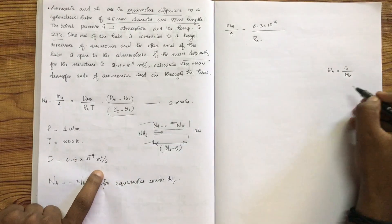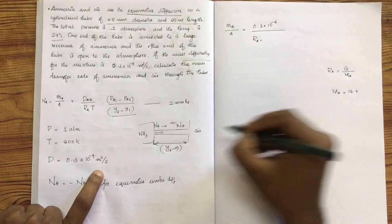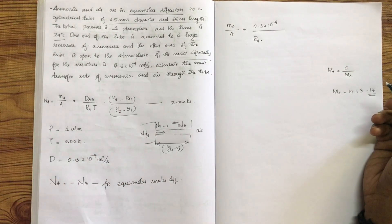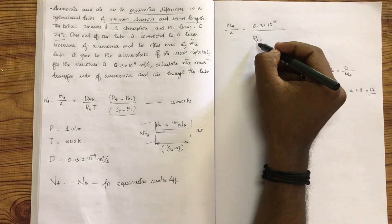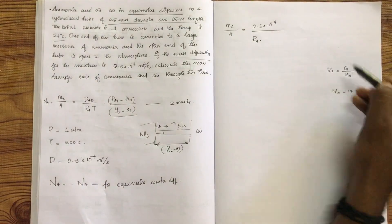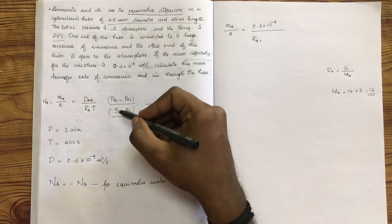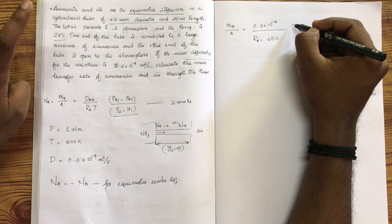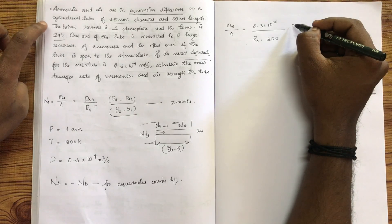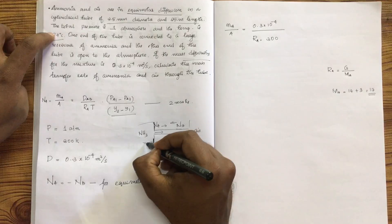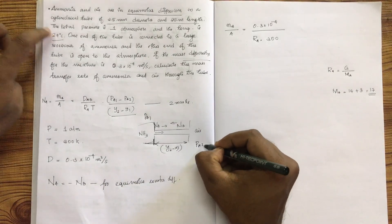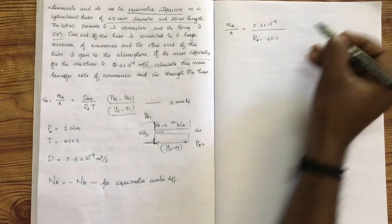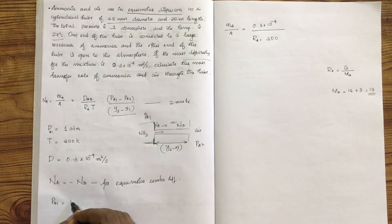We fix the values: molecular weight MA is 17, RA is 8314 divided by MA. Temperature is 300 Kelvin. The pressure difference PA1 minus PA2: PA1 is the partial pressure of ammonia. PA1 is 1.013 into 10 raise to 5 Newtons per meter square minus PA2 which is 0, since the other end is open to atmosphere.